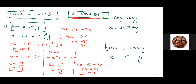Similarly, for cos x equals cos y, the general solution is x equals 2nπ plus or minus y. For tan x equals tan y, the general solution is x equals nπ plus y. These techniques are not always covered extensively by teachers but are very important, as they can be considered a challenging technique. Please make sure you remember these.